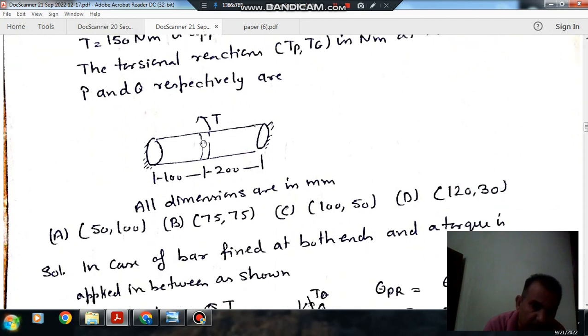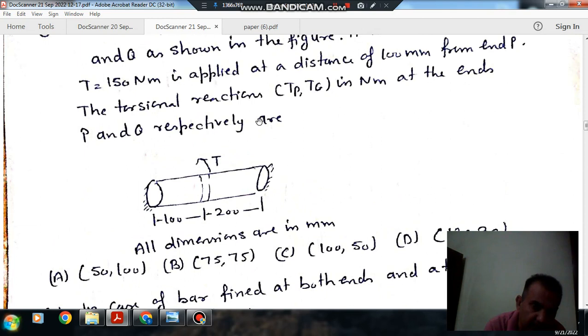So this is the bar and this is your torque. The torque is applied at 100 mm from P, and this section is 200 mm. Now we have to find out the torsional reactions Tp and Tq.